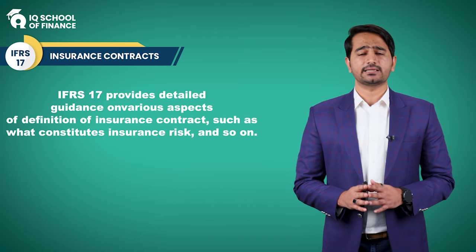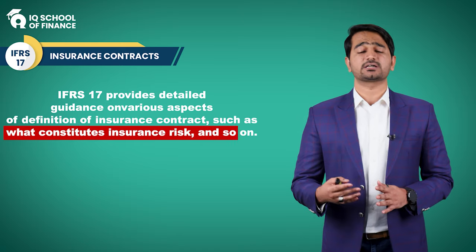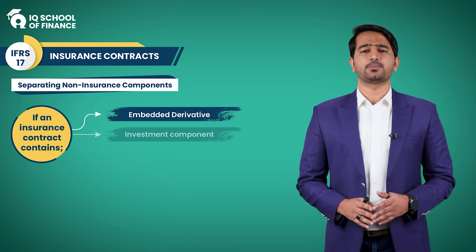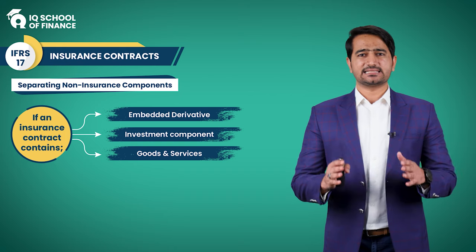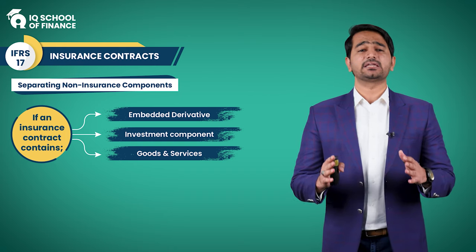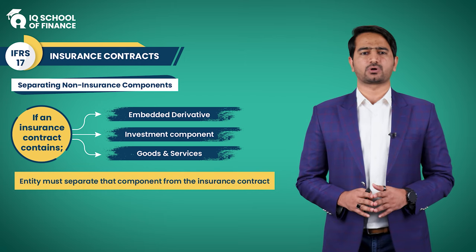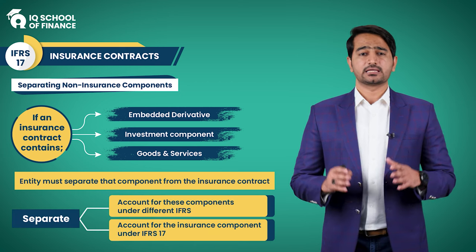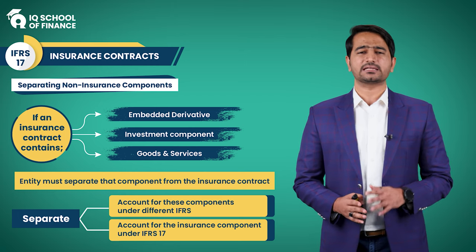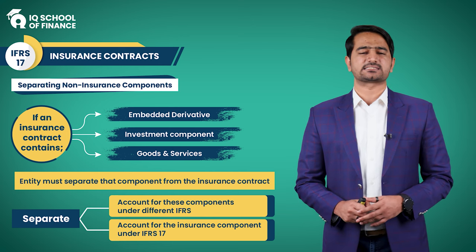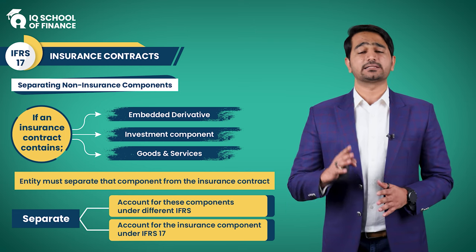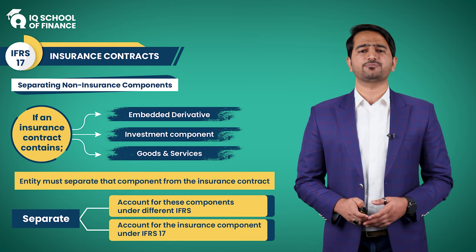IFRS 17 provides detailed guidance on various aspects of the definition of an insurance contract, such as what constitutes insurance risk. It is common for insurance contracts to include additional elements beyond core insurance coverage. These extra elements could be an embedded derivative, an investment component, or distinct goods or services. If any of these three components are part of an insurance contract, the entity must separate them from the main insurance contract. The separated component will be accounted for under a different standard — either IFRS 9 for financial instruments or IFRS 15 for revenue from contracts with customers.